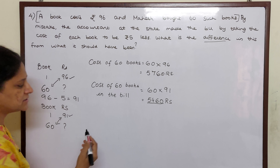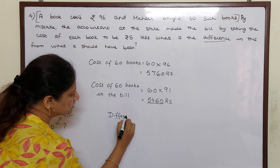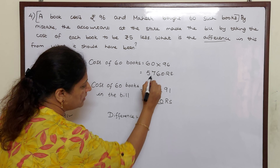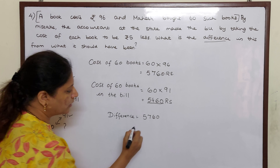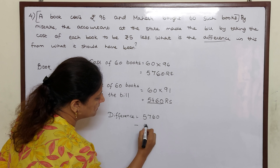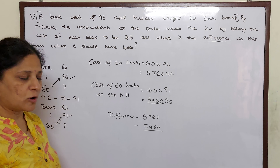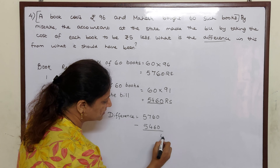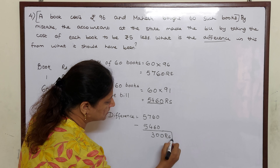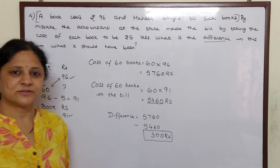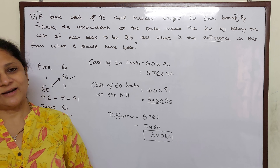Now, what is the difference in the bill from what it should have been? Difference means subtraction. So the difference equals 5,760, the actual bill amount, minus 5,460, the wrong bill made by the accountant. The difference works out to 300 rupees. Hope you understood, children. Let us see more in our next video.